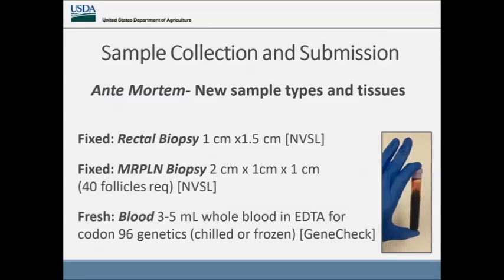For antemortem sample submission: rectal biopsy requires a one centimeter by one and a half centimeter sample, submitted to NVSL. For medial retropharyngeal lymph node biopsy, the sample is two centimeters by one centimeter by one centimeter — developed to be comparable to post-mortem — with NVSL determining that 40 follicles are required for a comparable sample. Blood — three to five mils of whole blood in EDTA — is required for codon 96 genetics, kept chilled or frozen.